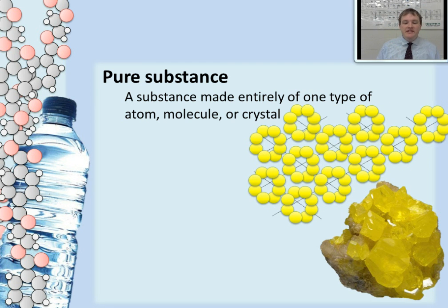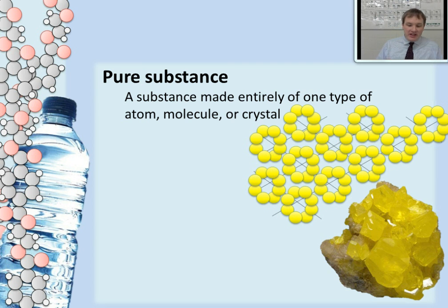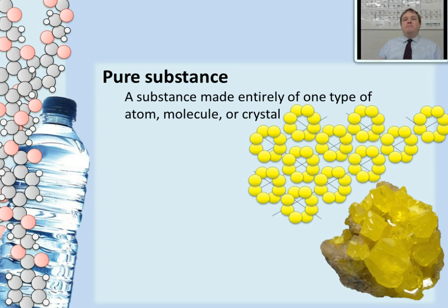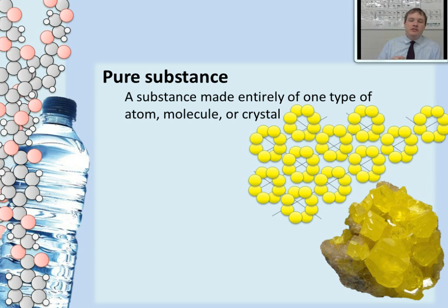Here's an example: this is elemental sulfur. Notice that there's only one type of atom, and those atoms are actually bonded together into one type of molecule. Because it's one type of molecule, that makes it a pure substance. But this goes even further — those molecules are bonded together in one single crystal network. So by any criteria, this sulfur is a pure substance: it's made up of one kind of atom, there's only one kind of molecule, and it's one crystal.